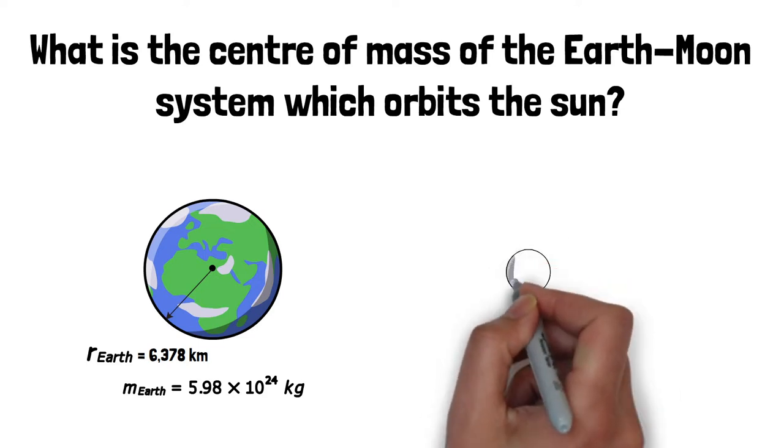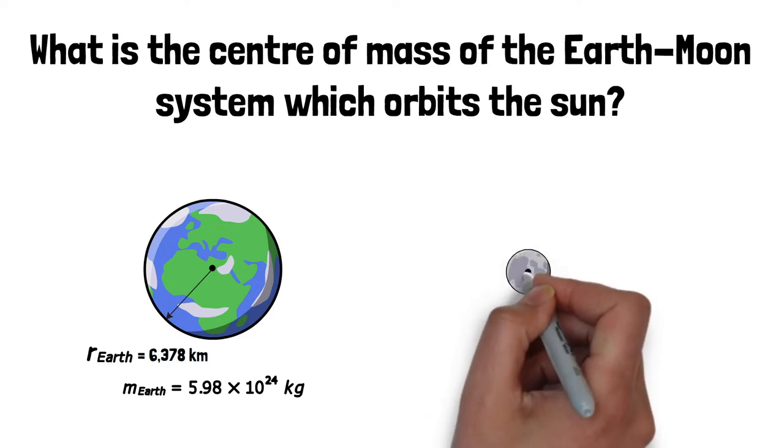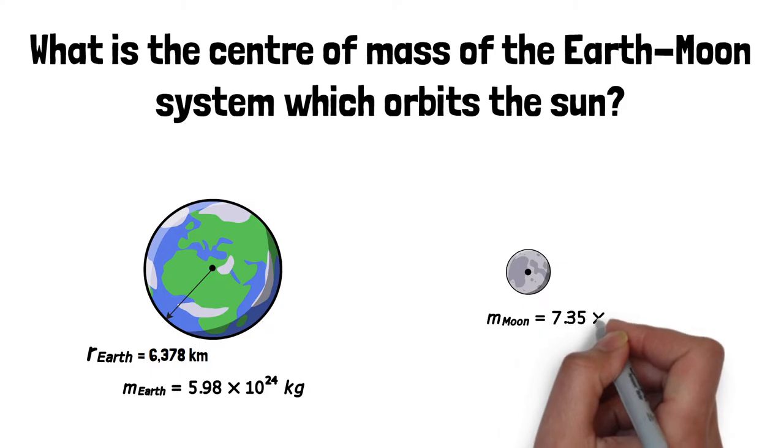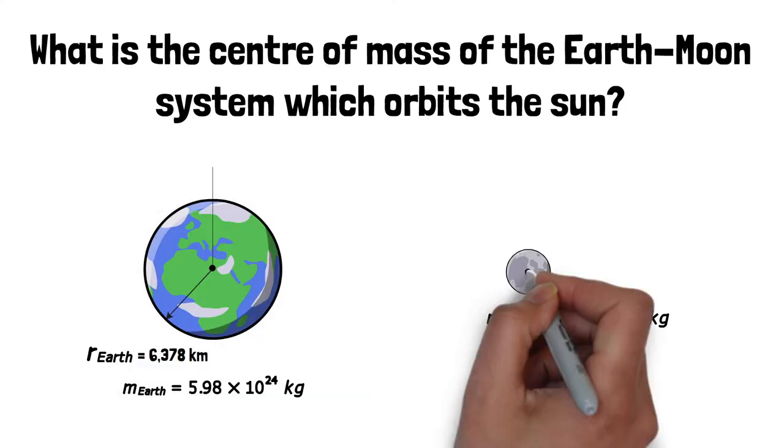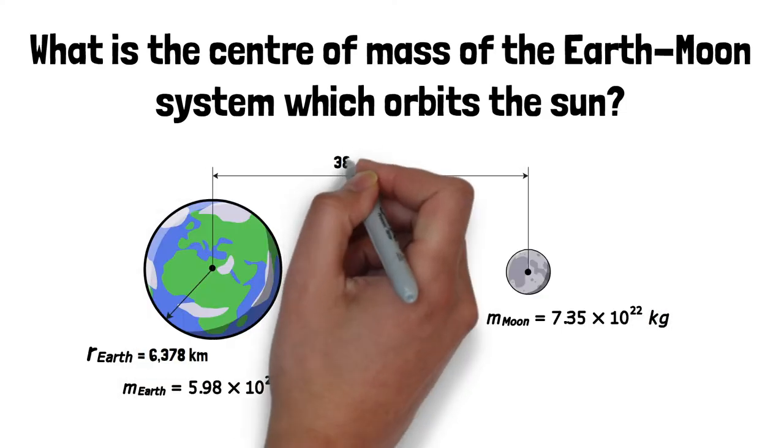Conversely, the Moon is quite a bit smaller, having a total mass of 7.35 times 10 to the power of 22 kilograms. The distance between the centers of mass of the Earth and the Moon is about 385,000 kilometers.